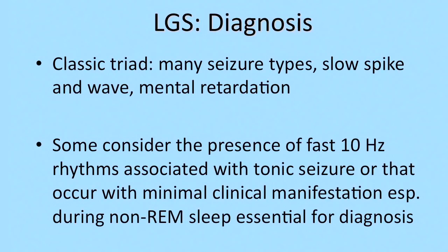The diagnosis really relies on the classic triad of many seizure types, mental retardation, and the classic EEG features, mainly the slow spike and wave. Some people consider the presence of 10 Hz fast activity as essential for diagnosis. This can be associated with atonic seizures or can occur with minimal clinical manifestations such as apnea or truncal rigidity, seen mainly during non-REM sleep.